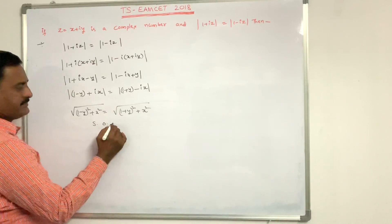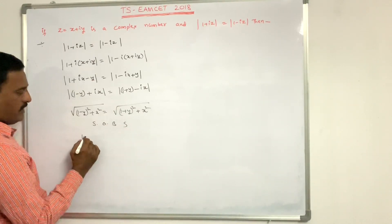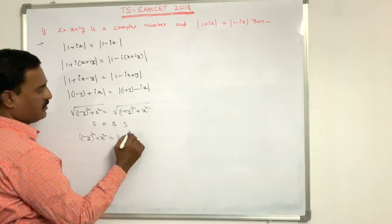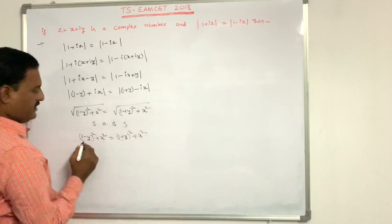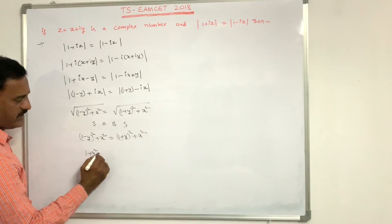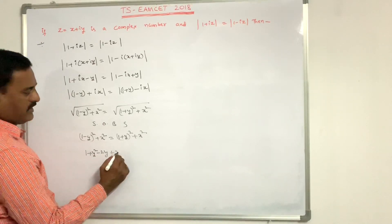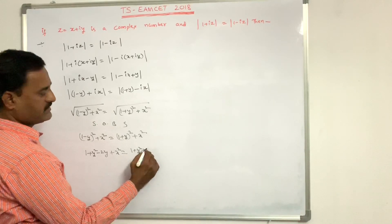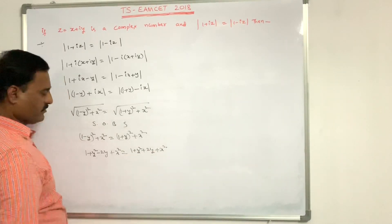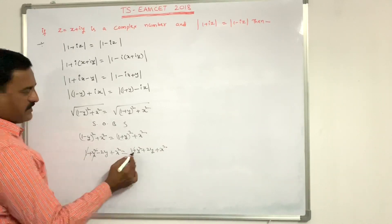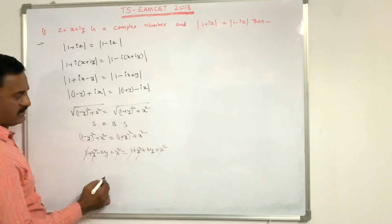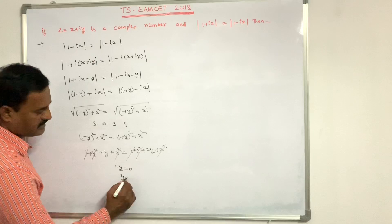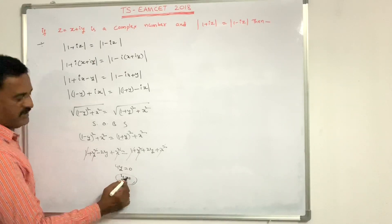Squaring both sides: (1 - y)² + x² = (1 + y)² + x². Expanding: 1 + y² - 2y + x² = 1 + y² + 2y + x². The 1, y², and x² terms cancel on both sides, giving -2y = 2y, so 4y = 0, therefore y = 0.